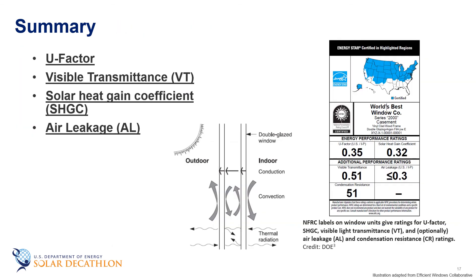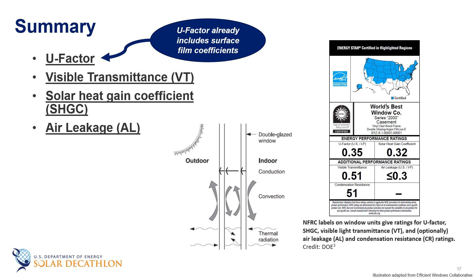To recap, there is a lot more to windows than initially meets the eye. Luckily, the National Fenestration Rating Council has standardized a label that captures the important characteristics of a window and helps you compare windows and find those best suited to your building's needs. One important thing to note: the U-factor on this label already includes the surface film coefficients, so it's what you put directly into the heat transfer calculations. Please feel free to reach out to us with questions, and thank you for watching.